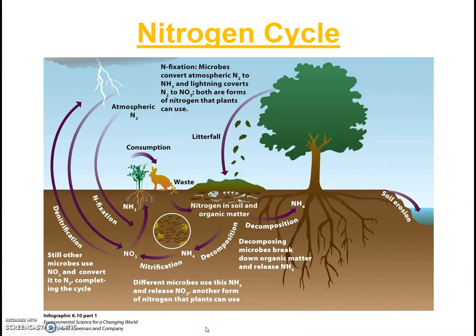The nitrogen cycle — this is likely the cycle you are least familiar with. It's fascinating, especially since it's nearly entirely run by bacteria. Every cell of our bodies needs nitrogen, and 78% of the air we breathe is nitrogen, yet we have no way to incorporate that atmospheric nitrogen into our bodies. It's all around us, yet essentially unavailable. How then do we obtain the nitrogen we need? You'll have to figure that out.